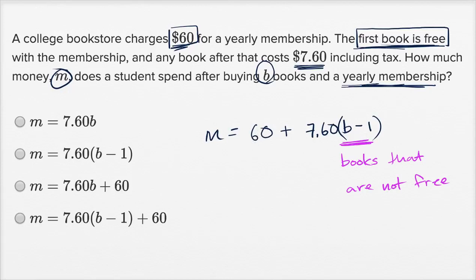All right, now let's see which of these choices actually match what we just wrote. So this one doesn't. It doesn't include the membership and doesn't take one from the B to account for the free book. This one over here, it does account for the free book, but it doesn't account for the membership, so you don't want to do that.